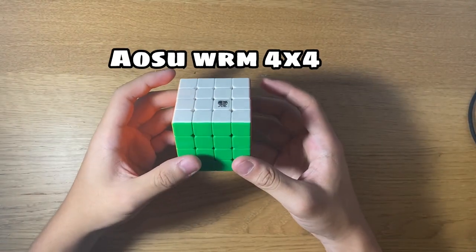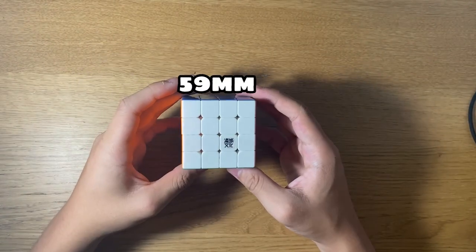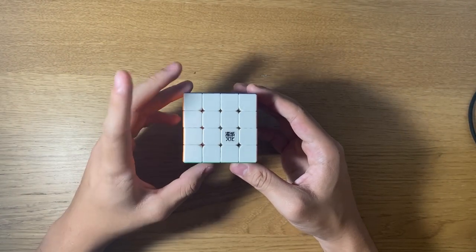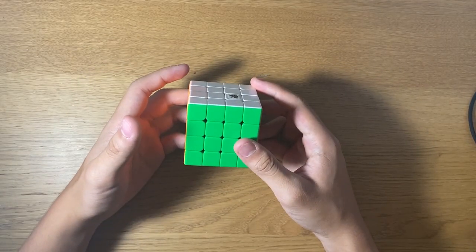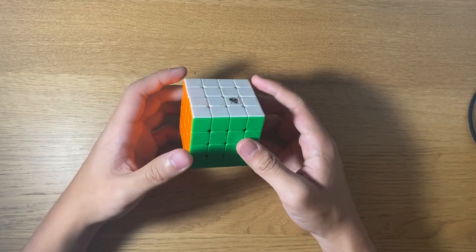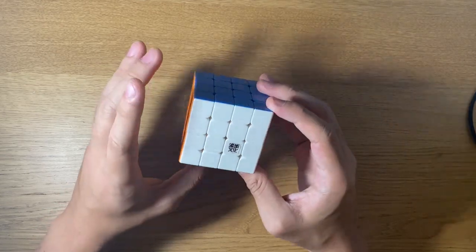So this is the Aosu WRM 4x4. It is 59mm compared to my old main, the MGC 4x4, which is 60mm. I find that the size of this 4x4 is more suitable for me because I have relatively small hands.